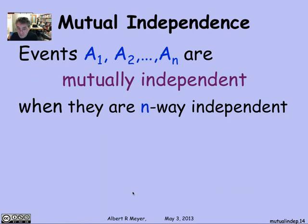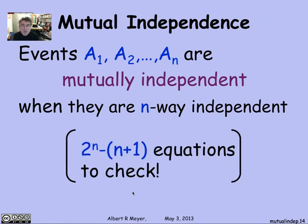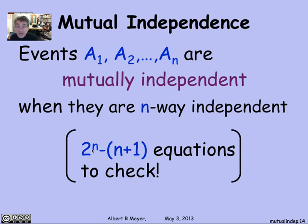Mutual independence of n sets is simply n-way independence. Checking it requires verifying that for every subset of A1 through An, the probability of the intersection equals the product of the individual probabilities. There are 2^n possible subsets, but you skip the empty set and singletons, leaving 2^n − (n+1) equations to check. In general, it's not easy to verify mutual independence by direct calculation, and you usually arrive at it by assumption.